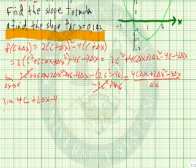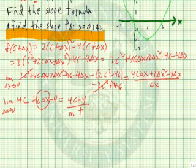We take the limit of this, as delta x approaches 0, this term cancels out, so our answer is 4c minus 4. So this will be the slope of the tangent line anywhere on the curve.